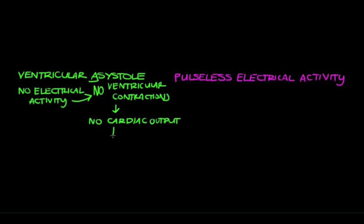And without cardiac output, you're not going to have a pulse. So anybody who has ventricular asystole will not have a pulse. And on EKG, this looks like a flat line.